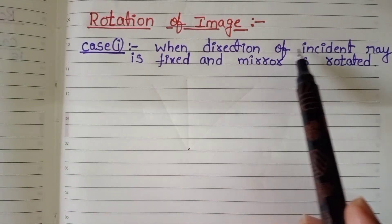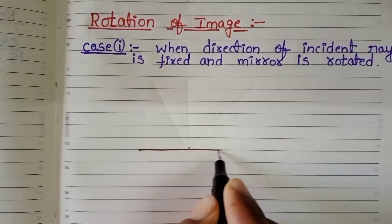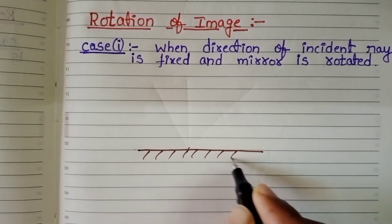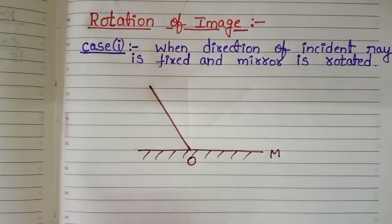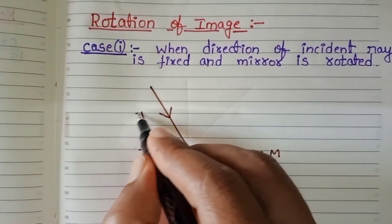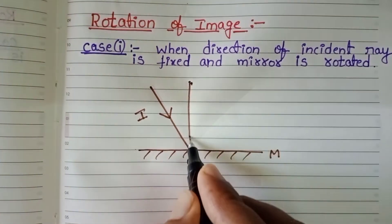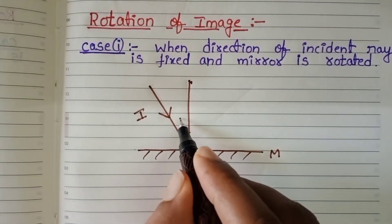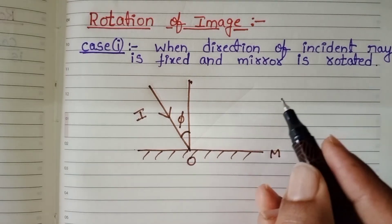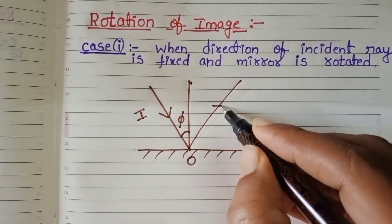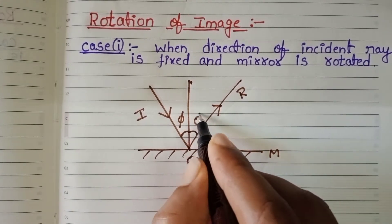First case is when the direction of the incident ray is fixed and the mirror is rotated. Let us draw a plane mirror M. When a light ray is incident on the plane mirror, this is the point of incidence. I is the incident ray. Now draw the normal. After touching the plane mirror, this light ray returns back into the same medium, so this light ray is called the reflected ray.